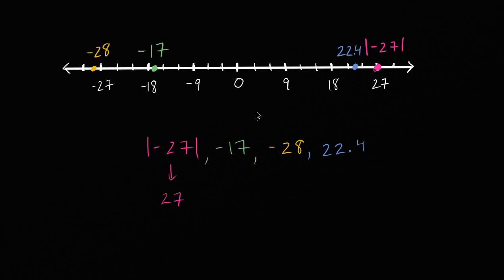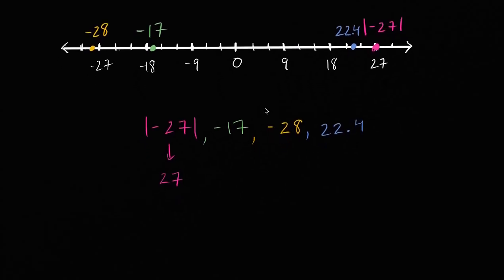So if we want to sort it from least to greatest, well, we just have to start at the left end of the number line. The smallest of them, or the least of them, is negative 28. Then we go to negative 17. Negative 17.